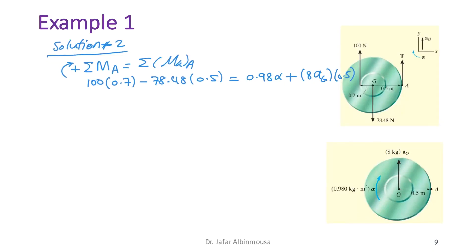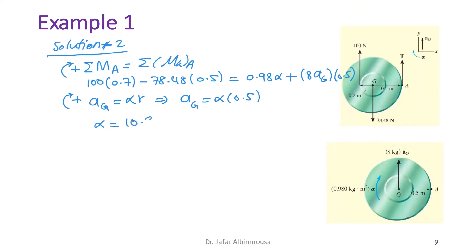Assuming rolling without slipping, a_G = α × 0.5. Substituting and solving gives α = 10.3 rad/s² — the same answer as solution one.